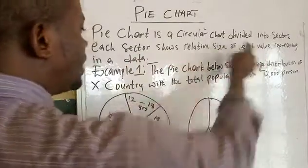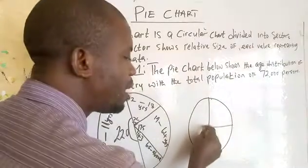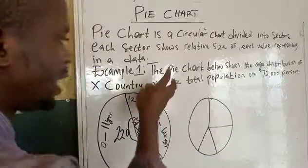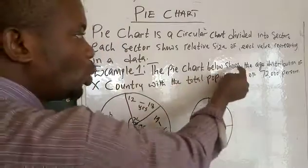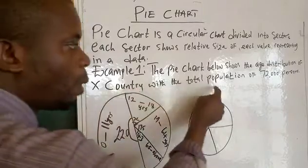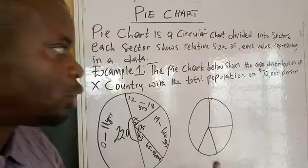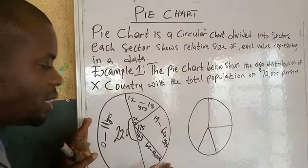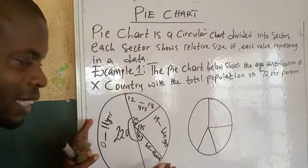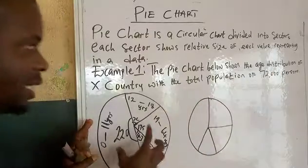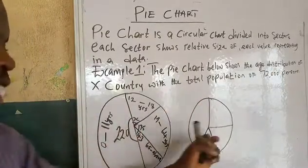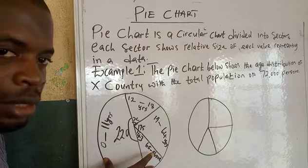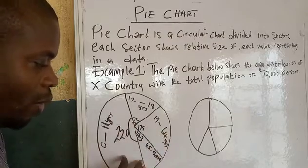Each sector shows the relative size of each value represented in the data. Each sector represents a particular proportion of the whole data. For example, the pie chart below shows the age distribution of Country X with a total population of 72 persons. We have four sectors here — one, two, three, four.